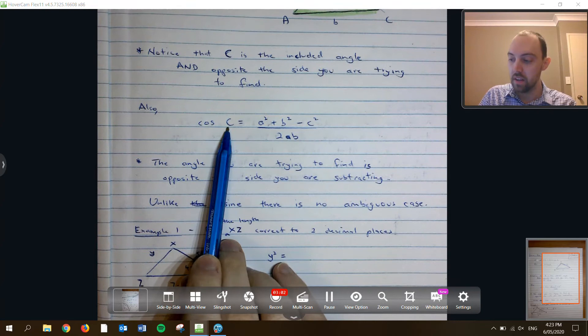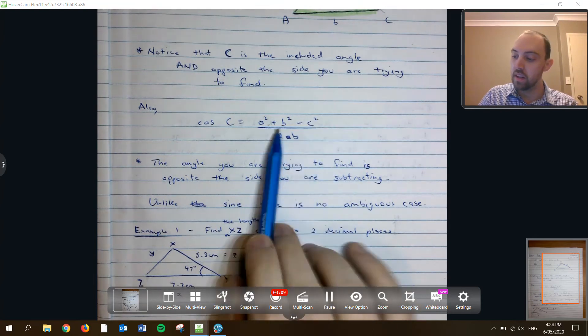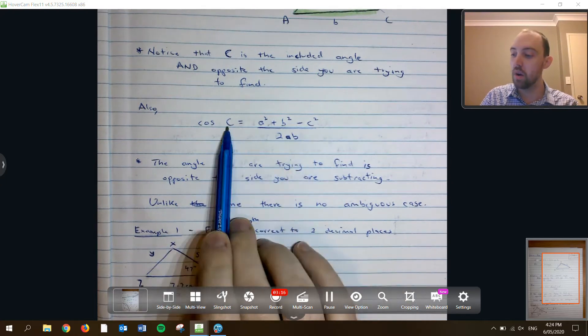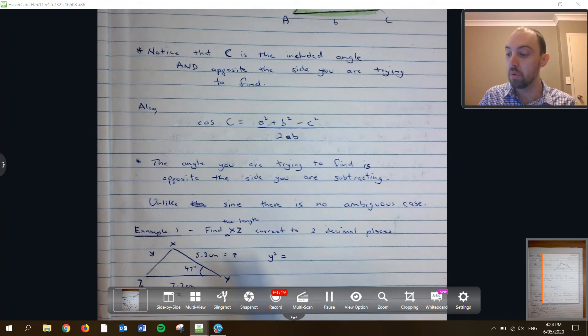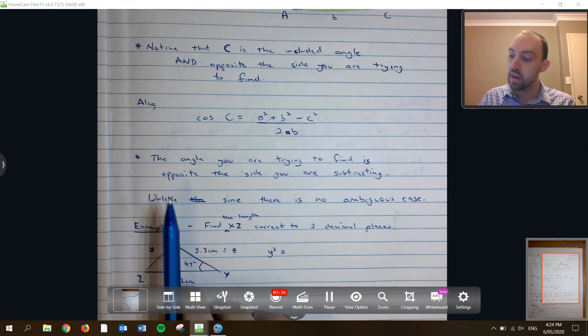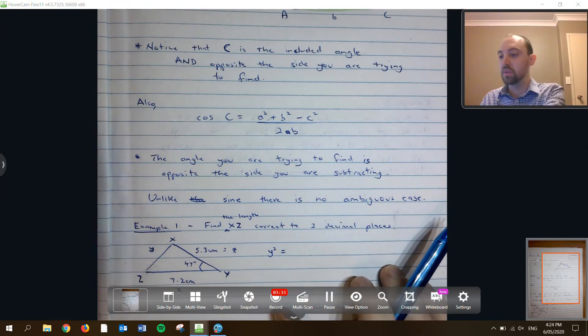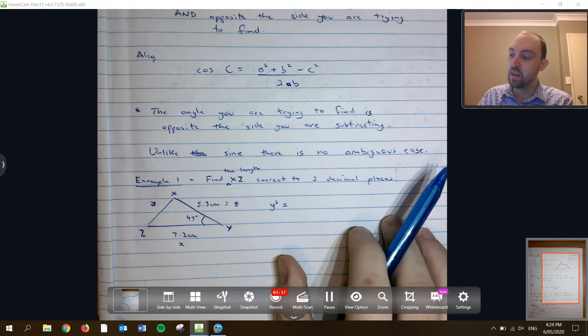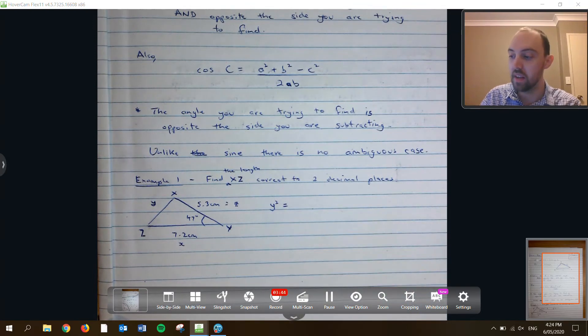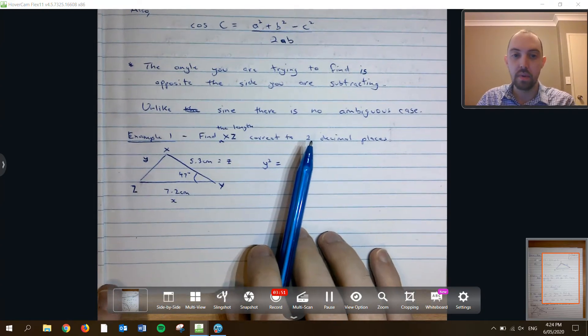The angle that you are trying to find is opposite the side that you are subtracting. Generally the mistake that people make here is that they don't pay attention to which side is opposite that angle, and then they end up taking the wrong one or finding the wrong angle, and then there's a lot of carry-through mistakes with that kind of thing. Now, unlike sine, when you do the inverse of cos, there is no ambiguous case for our triangles that we're doing because of the way the cos works. Cos of theta, cos of 180 take theta is negative. We can't have that negative angle that we want.